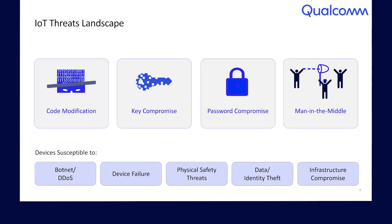What are some of the possible threats to an IoT device? These may include risks due to code modification, key exposure, compromised credentials, and man-in-the-middle attacks. These threats leave the device susceptible to botnet or device denial of service attacks, device failures, as well as data or identity theft.